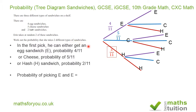The probability of picking an egg sandwich and then another egg sandwich is 4 over 11 times 3 over 10, which equals 12 over 110.